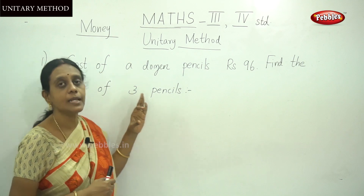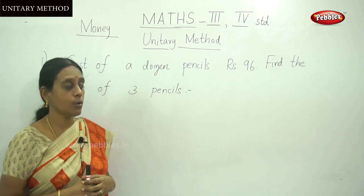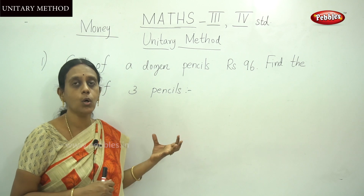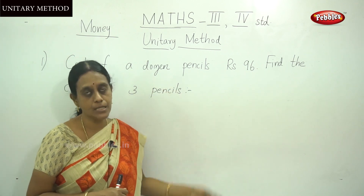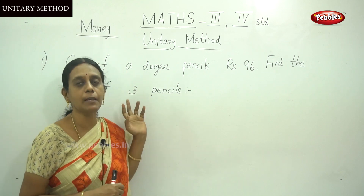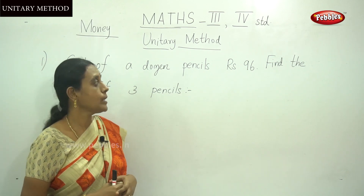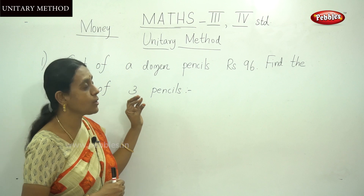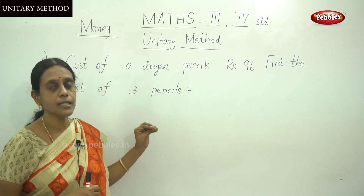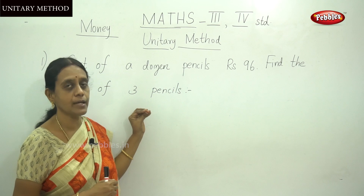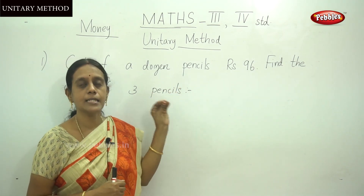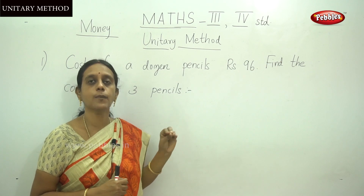Find the cost of 3 pencils. First we have to calculate the cost of each pencil, and then we can calculate the cost of 3 pencils. This is a division sum. A dozen means the number 12.